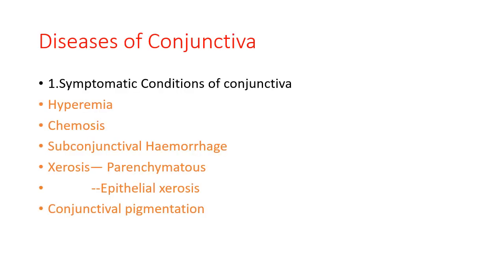Diseases of the conjunctiva include symptomatic conditions such as hyperemia, chemosis, subconjunctival hemorrhage, and xerosis — both parenchymal xerosis and epithelial xerosis. Conjunctival pigmentation can also be asked for short notes, and all these symptomatic conditions are useful in viva examinations.